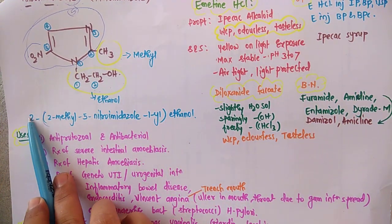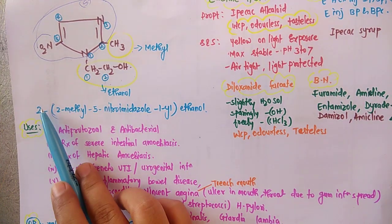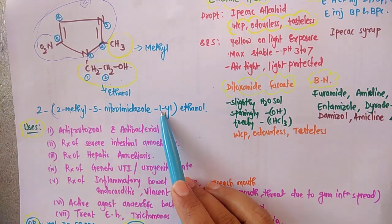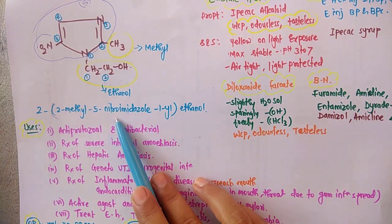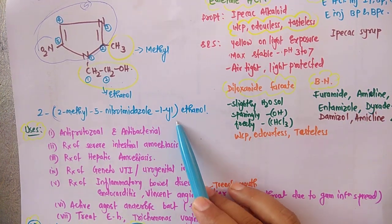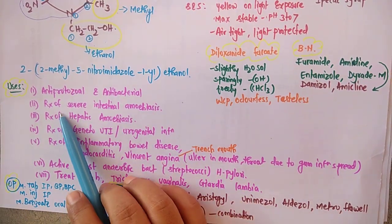And second position has hydroxy, so two ethanol. So it is two dash bracket, two methyl five-nitroimidazole, or five-nitroimidazole dash one dash yl, bracket complete, ethanol.